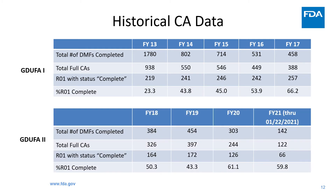But over the next four fiscal years, the percentage of first cycle completes more than doubled to 66%. Here is the GDUFA-2 data for first cycle completeness assessments. For GDUFA-2, we don't see a steady increase in percentage first cycle completes as we saw for GDUFA-1, but percentages are still over 50%, except for FY19. The average first cycle completes for GDUFA-2 is around 52%.